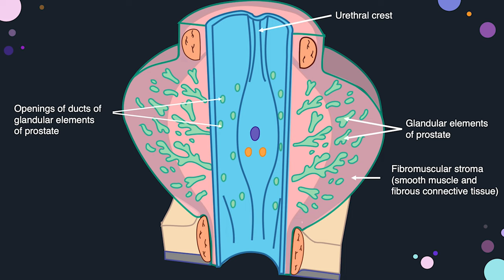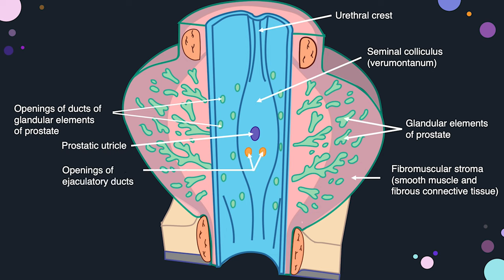The urethral crest becomes the verumontanum, and we can see the prostatic utricle opening and the two openings of the ejaculatory ducts. The internal urethral sphincter is made up of smooth muscle. It is especially important in males because the genitourinary tract is a single tract. During intercourse, this internal urethral sphincter closes to prevent retrograde ejaculation. It is under involuntary control, regulated by the autonomic nervous system.